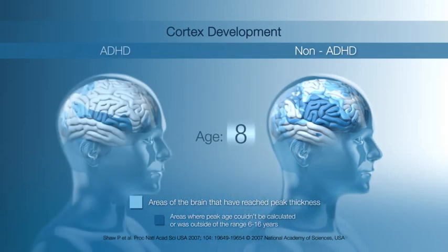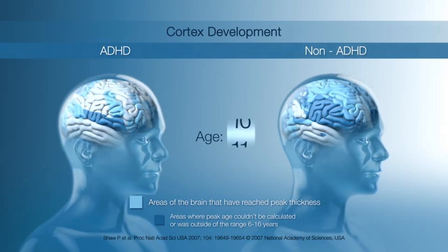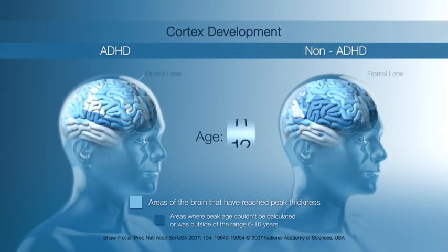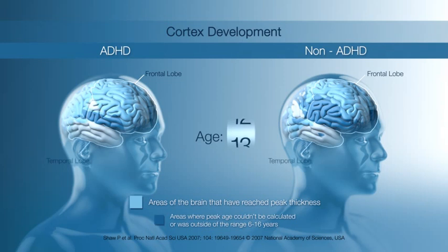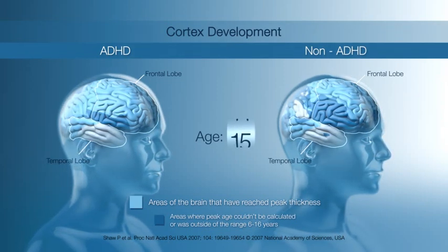Scans have shown that in children with ADHD, the cortex generally develops more slowly, particularly in frontal and temporal lobe regions, which are important for memory and controlling behavior.